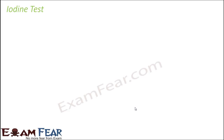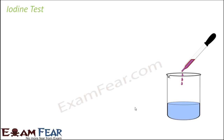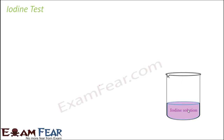For that, we perform a test called the iodine test. We make use of iodine and perform an experiment which proves whether a food item contains carbohydrates or not. To prepare the iodine solution, we need a few drops of iodine solution added to some water in a beaker. You add two to three drops of iodine to the water, and the color of the water changes to a light purple color. That is how you get the iodine solution.